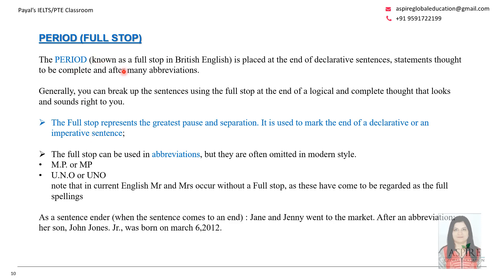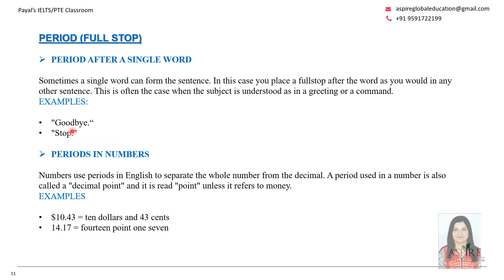Now let's see where we use the full stop. The full stop — called a 'period' in American English — is placed at the end of declarative sentences, indicating the end of a sentence. Having a full stop is mandatory; otherwise the examiner may not know where the sentence ends, and with too many subjects and verbs, the connectivity will be lost, affecting your cohesion and coherence score. A full stop is also used with abbreviations like MP, etc., after single words like 'Goodbye.', and with numbers such as 10.43 or 14.17.